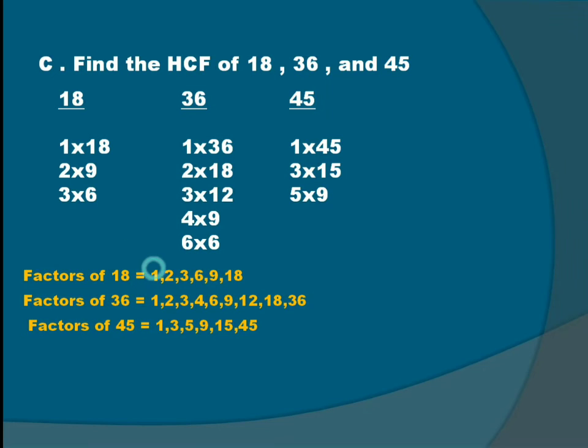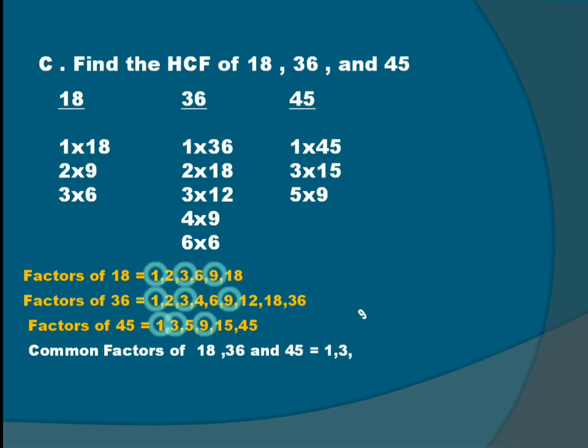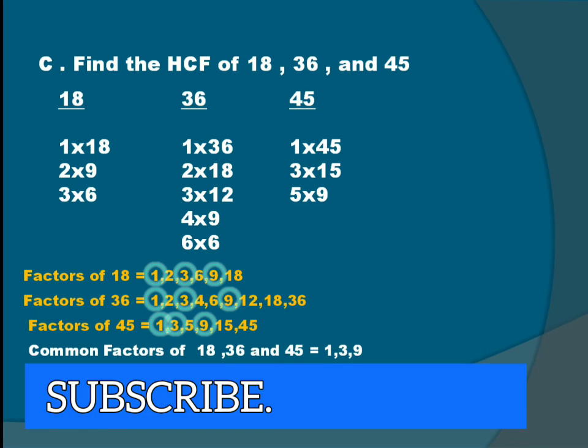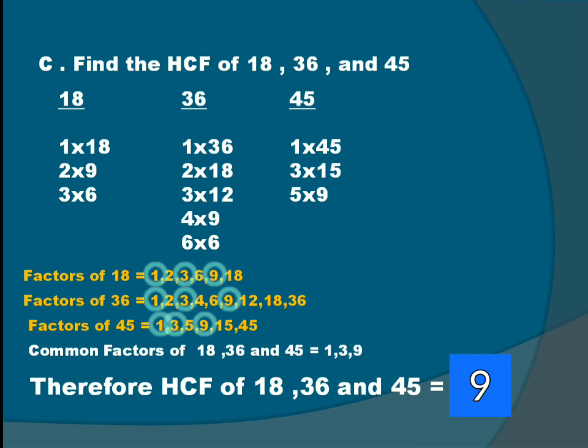Now common factors of 18, 36, and 45 are 1, 3, 9. Common factors of 18, 36, and 45 is 1, 3, 9. Therefore HCF of 18, 36, and 45 is 9.